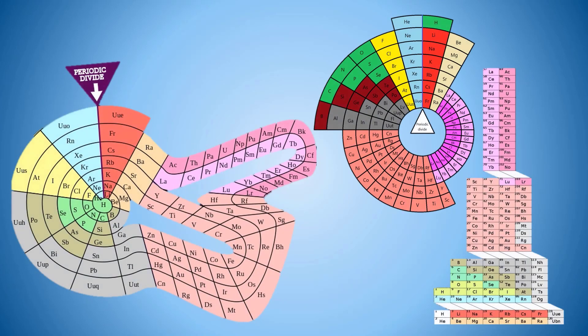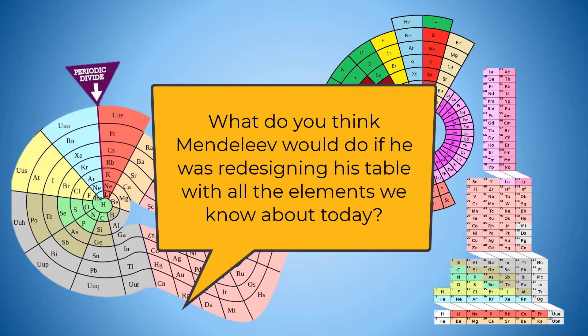Of course, there are lots of ways to arrange the elements that demonstrate different features compared to the one which we tend to see in our chemistry classrooms. For example, the lanthanides and actinides tend to get shoved to the bottom, which doesn't really capture their actual position. What do you think Mendeleev would do if he was redesigning his table with all the elements we know about today?